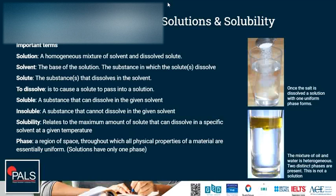The salt solution example has one phase. An example of a mixture that is not homogeneous but heterogeneous is a mixture of oil and water. We can see two distinct phases here — the oil phase and the water phase. Both phases have different physical properties; for example, oil has a lower density than water because it floats on top.